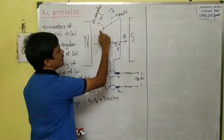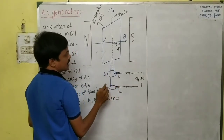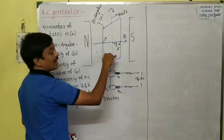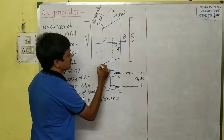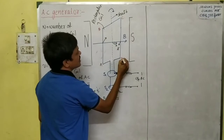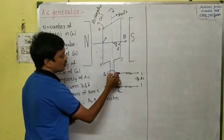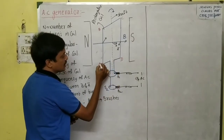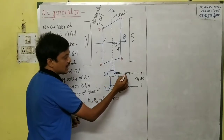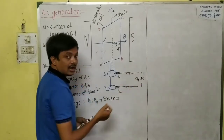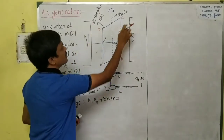The AC generator has a rectangular coil. Both ends of the rectangular coil are connected to two slip rings S1 and S2. The coil has N turns. One end of the coil ABCD is connected to slip ring S1 and the other end is connected to slip ring S2. The slip rings are connected to brushes B1 and B2, and from the brushes we take the output. The coil rotates between the two poles of the magnet.